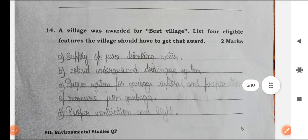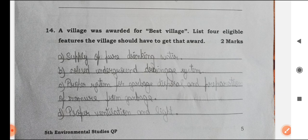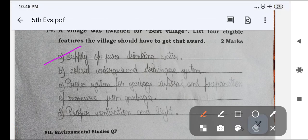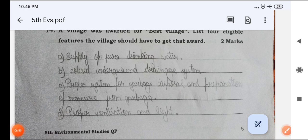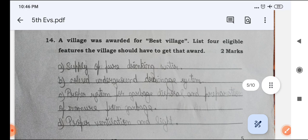Next one is, a village was awarded for best village. List four eligible features the village should have to get that award. First one is supply of pure drinking water. Second one is closed underground drainage system. Proper system for garbage disposal and preparation of manure from garbage. Proper ventilation and light. These are the activities that are good for best village.